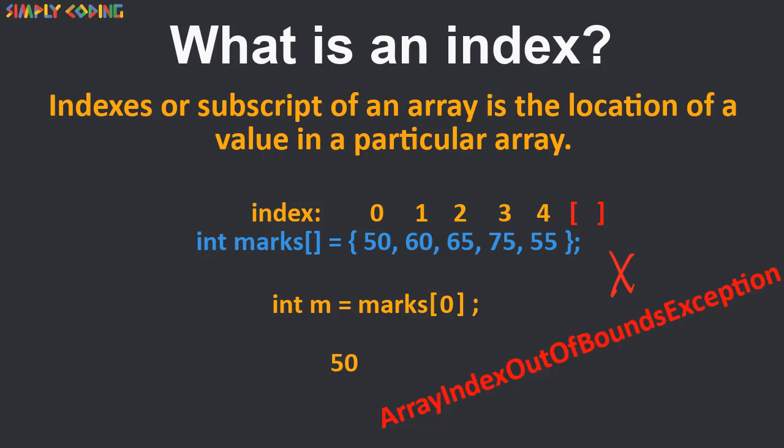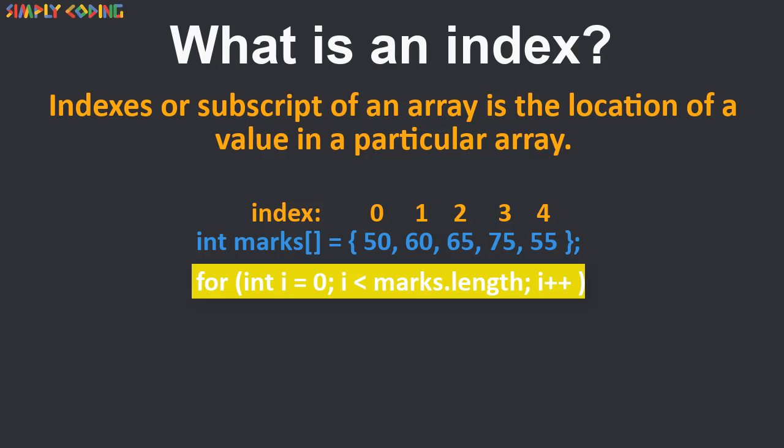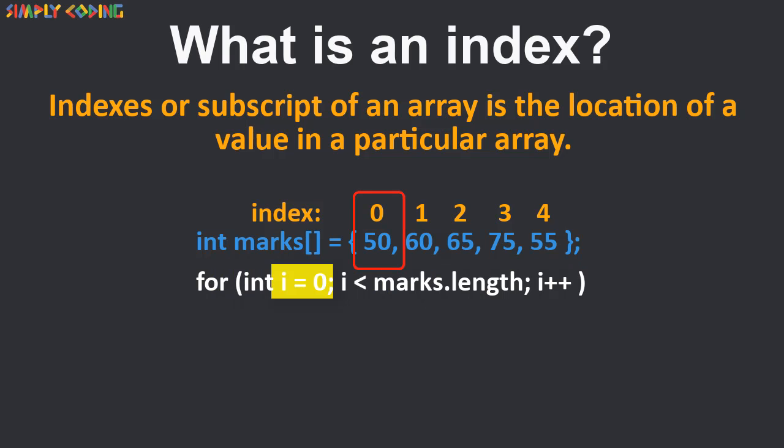Let's see how we will use indexes in combination with looping construct like for to access the entire array. Assuming we have this array, we can use for loop to set up a counter starting with 0 as array index starts with 0. This loop will run till less than array length. We use less than over here because last array index is 1 less than the array length. This is incremented by 1 for each iteration.